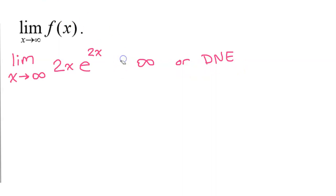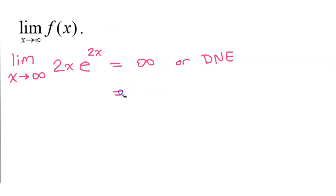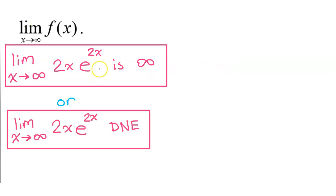Here's a common mistake to avoid: you are not allowed to put an equal sign before infinity. You can't say that a limit equals infinity — you will lose a point on the AP exam. You also can't say "equals does not exist" because that doesn't make grammatical sense. I would use the word "is." So we can say the limit of this function is infinity, or does not exist. My personal preference is "does not exist."